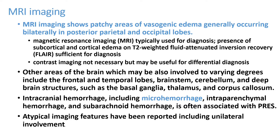Other areas of the brain which can be involved include temporal lobes, brain stem, cerebellum, deep brain structures, basal ganglia, thalamus, and corpus callosum. Depending on the site where vasogenic edema develops, the patient can have symptoms related to that area. Most are reversible; sometimes patients can have microhemorrhages on MRI. Since CT may not pick up PRES syndrome, if we suspect PRES it is better to go for MRI.